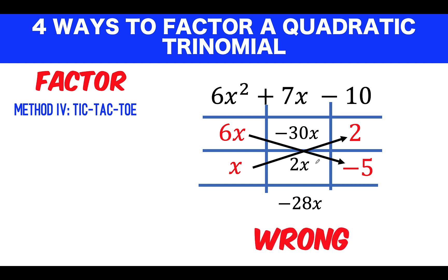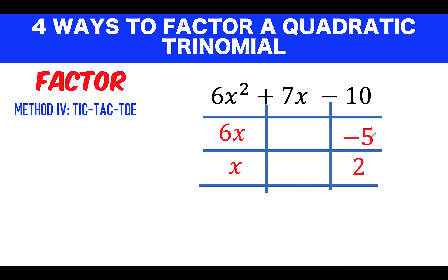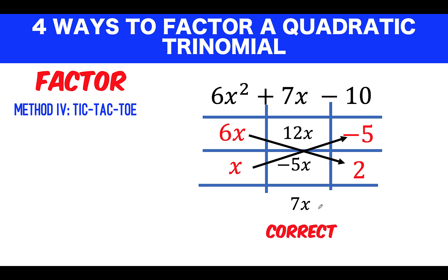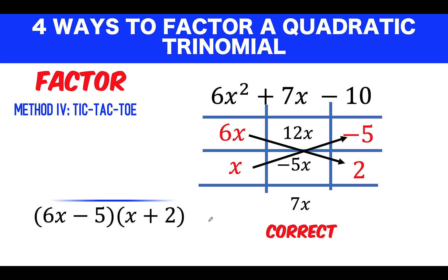When you get the wrong result, either swap the positions of the two constants or try a different combination — that's why it's called tic-tac-toe. Let's swap negative 5 and positive 2: 6x × 2 = 12x and x × (−5) = −5x; 12x − 5x = 7x, which is correct. Once you arrive at the correct middle term through this cross multiplication, the factors are (6x − 5)(x + 2). This is the final answer.